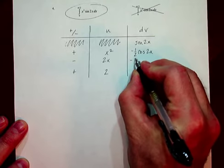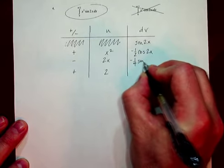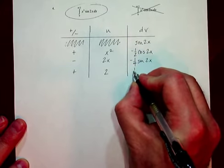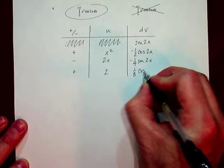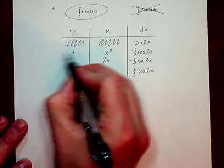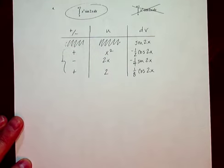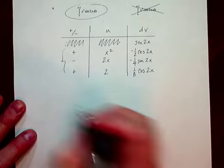This winds up, when you do it again, 1/4 sine of 2x, and then positive 1/8 cosine of 2x. And basically, it's these three rows that are your integral.